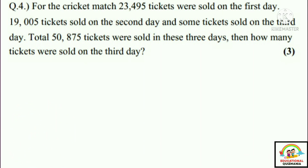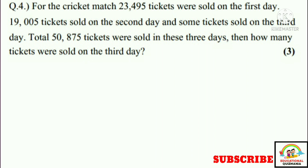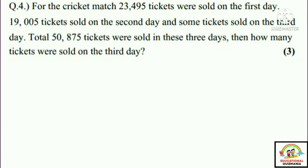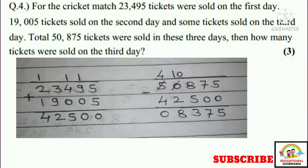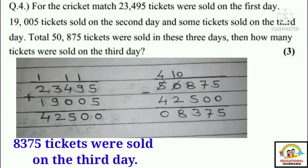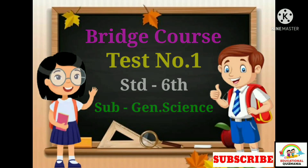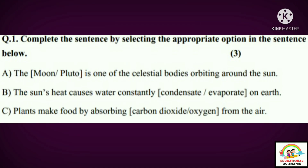Question four: For a cricket match, 23,495 tickets were sold on the first day, 19,005 tickets were sold on the second day, and some tickets were sold on the third day. Total 50,875 tickets were sold in these three days. Then how many tickets were sold on the third day? Answer: 8,375 tickets were sold on the third day.